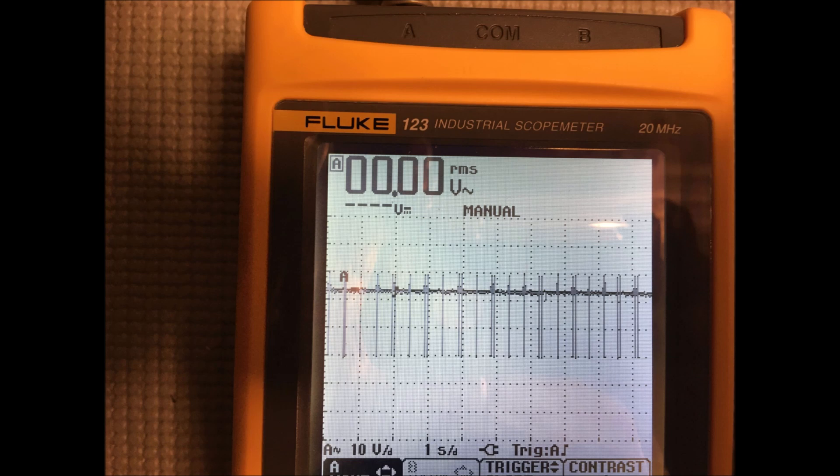So if we count all the boxes, one, two, three and times that times 1,000 which is the probe that means this coil, the US original new old stock coil is putting out 30,000 volts. Each of those little pips you see on the screen is when the coil is actually firing and this was done simply by connecting the probe to the secondary and just rotating the distributor. So that is an excellent output voltage and it looks great.